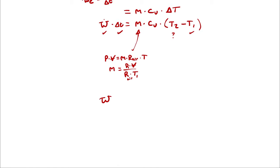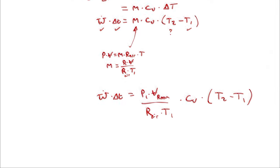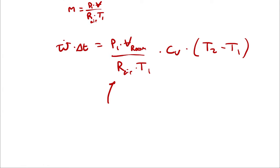So I have electrical power multiplied by duration equals P1 times the volume of the room divided by the specific gas constant of air times T1, times Cv, times (T2 minus T1). Next is calculating a couple of these intermediate quantities. I'm going to do this all symbolically, because I prefer to only perform the arithmetic once. So instead of plugging in the specific gas constant for air, I'm going to recognize that it is the universal gas constant divided by the molar mass of air.